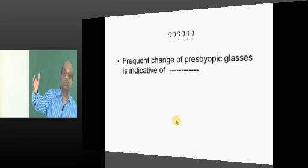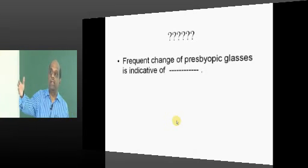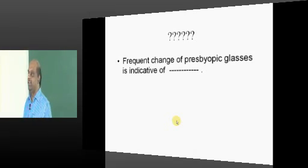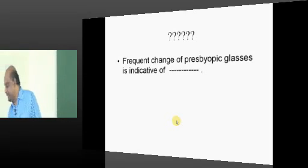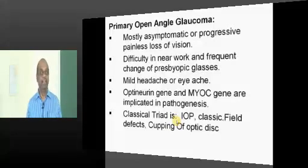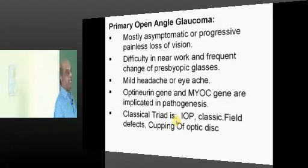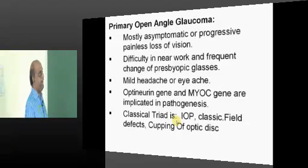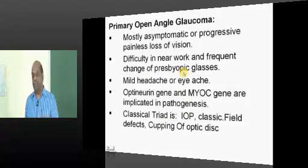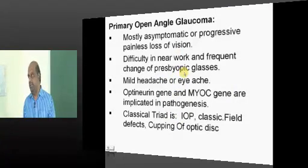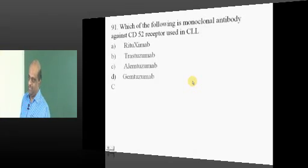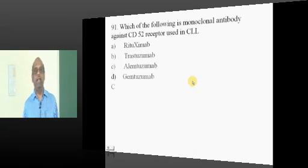Frequent changing of the presbyopic glass is indicative of cataract or glaucoma - which kind? Open angle or closed angle? Primary open angle glaucoma. Generally they are asymptomatic, sometimes they can present with frequent change of the presbyopic glasses, difficulty in reading the newsprint is a presenting problem.